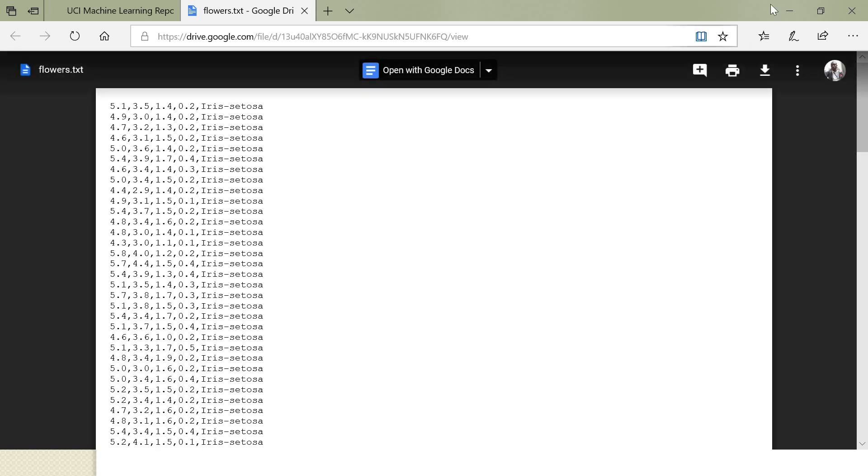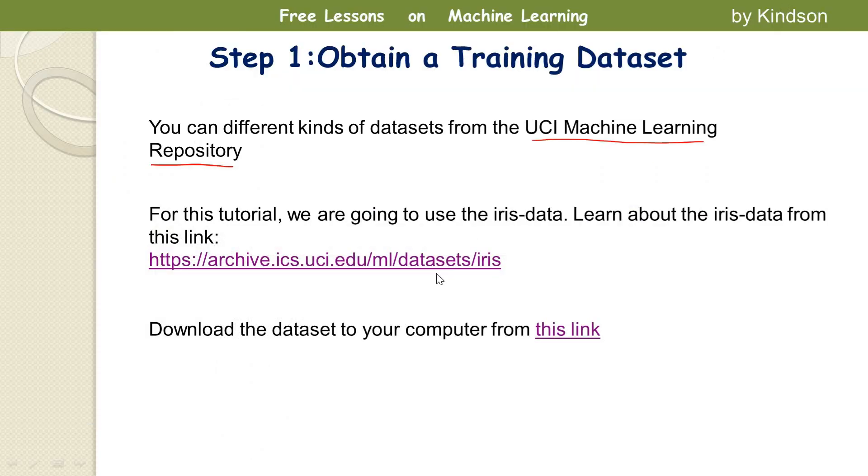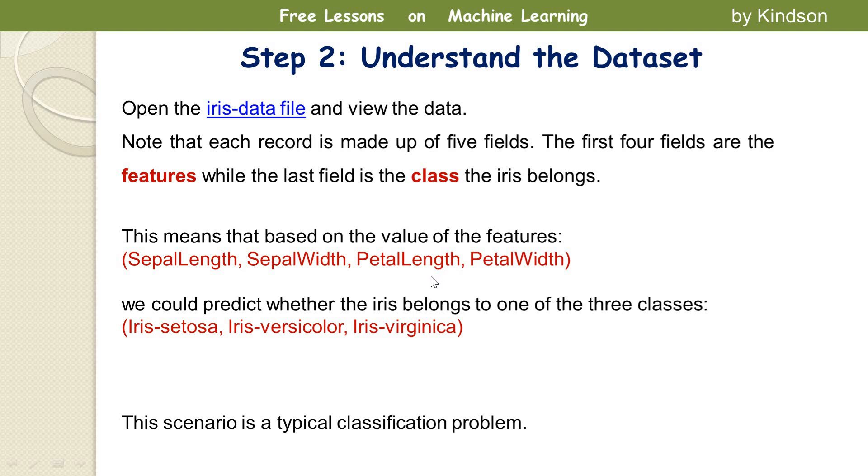So the next thing is to understand the dataset. That is one important thing: you understand the dataset. If you don't understand the dataset then it will be difficult. First, what do we need this dataset for? We need this dataset to train the model.